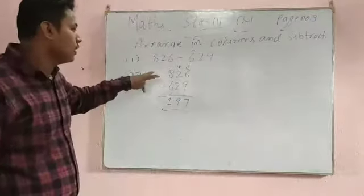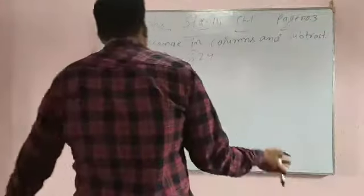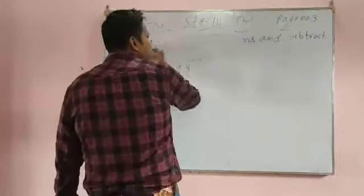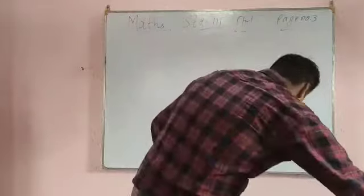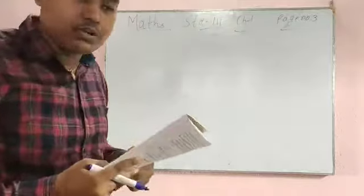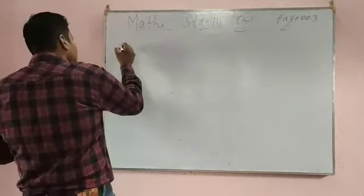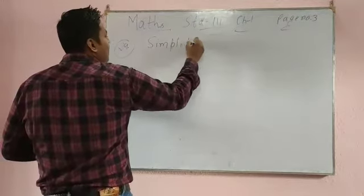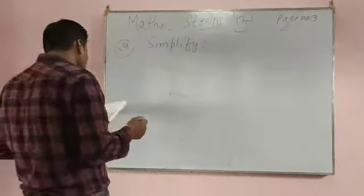It will become 7, 7 minus 6 is 1. So this is your answer. You have to arrange in column then subtract. Don't do shortcut. Now we'll move to question number 29.